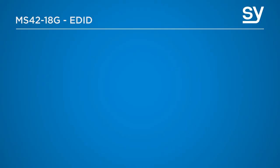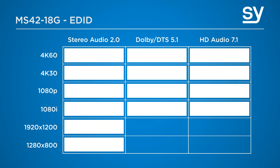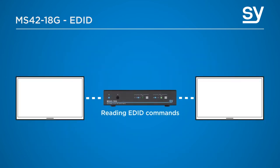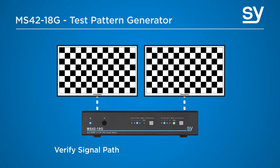Now let's talk about EDID management. RS-232 commands provide EDID management for the HDMI inputs and there are presets for various display resolutions from 1080i up to full 4K with different audio format choices. Or you can copy and store the EDID from either of the displays connected to the HDMI outputs. There is also a built-in test pattern generator, which offers unrivaled functionality for this class of device. You can use it for verifying your installed signal path, testing and setting up all your connected displays, and the six different test patterns may be sent to either or both outputs.